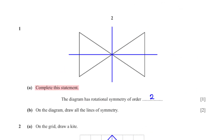Complete this statement. The diagram has rotational symmetry of order blank. The order of rotational symmetry is simply the number of times an object looks exactly like the original when it's rotated through 360 degrees. The shape in the diagram looks exactly like the original when rotated 180 degrees and 360 degrees, so the order of rotational symmetry is 2.